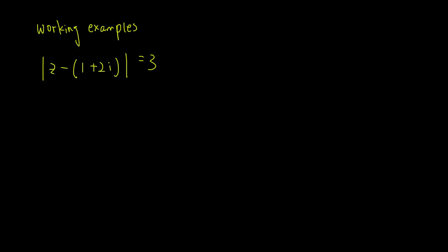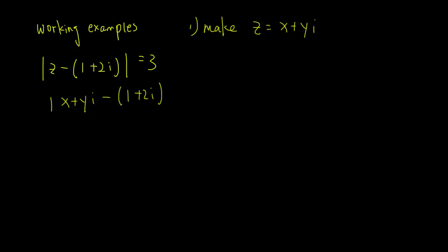Let's look at some more complicated questions. The question asks me to find the geometric interpretation, so I need to find an equation that will satisfy this modulus. The first thing we have to do is make z equal to x plus yi. So x plus yi minus 1 plus 2i equals 3.